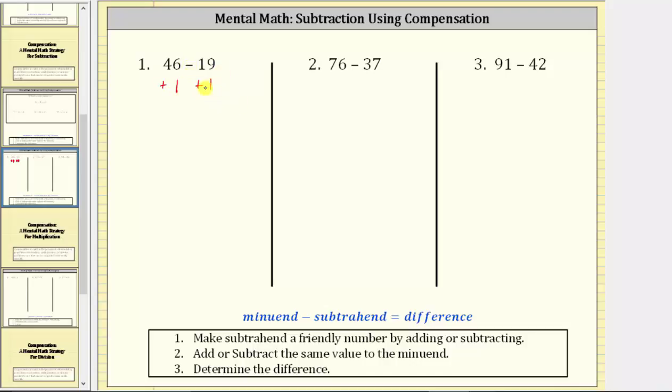And this should make sense because if we subtract 20 rather than 19, the difference will be one less than the original difference. If we want an equivalent difference, we must also add one to 46.